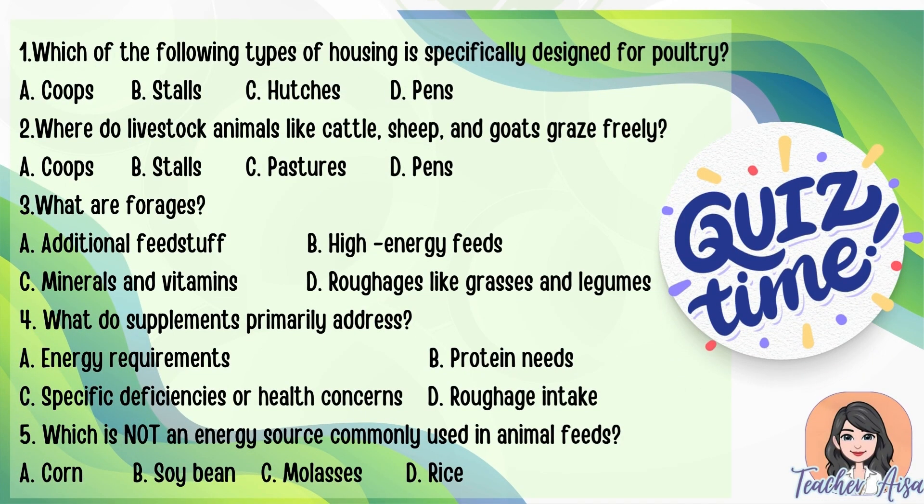Let's have a short quiz to test your understanding. 1. Which of the following types of housing is specifically designed for poultry? a) coops, b) stalls, c) hutches, d) pens. 2. Where do livestock animals like cattle, sheep, and goats graze freely? a) coops, b) stalls, c) pastures, d) pens.